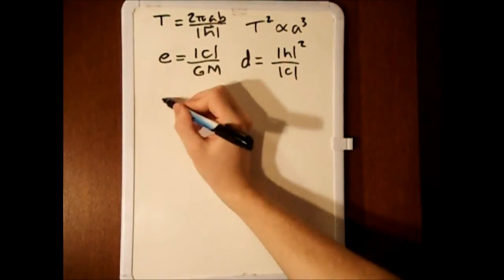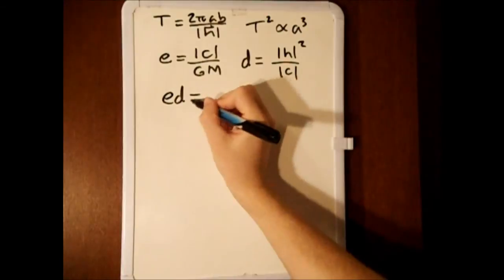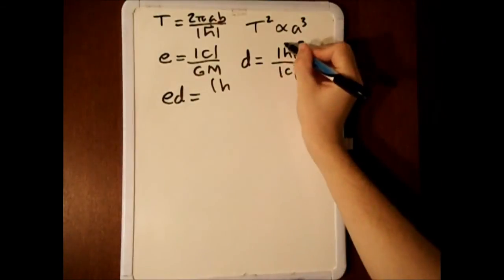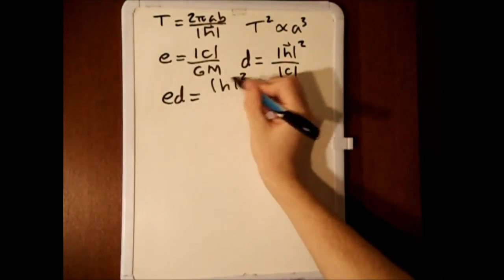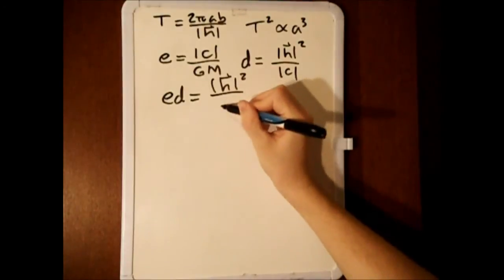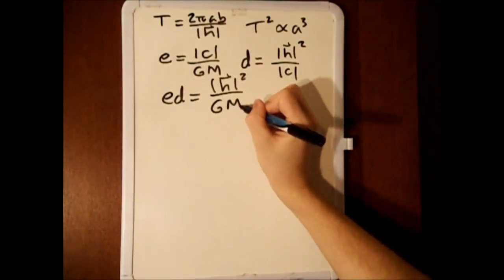Multiplying the two together, we can see that ed is equal to the magnitude of h squared divided by GM.